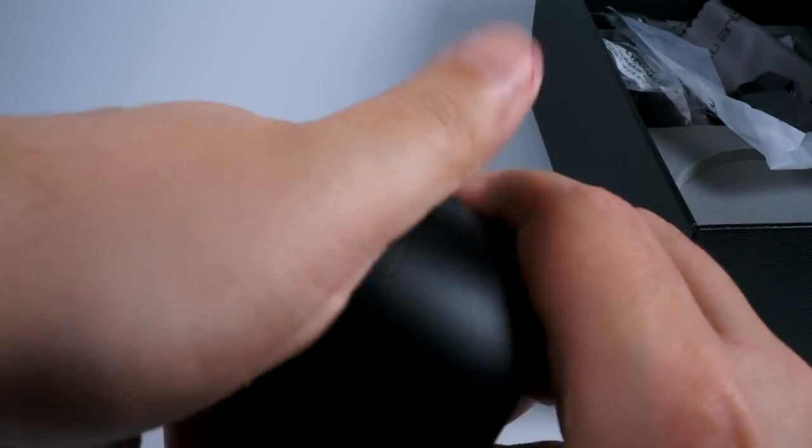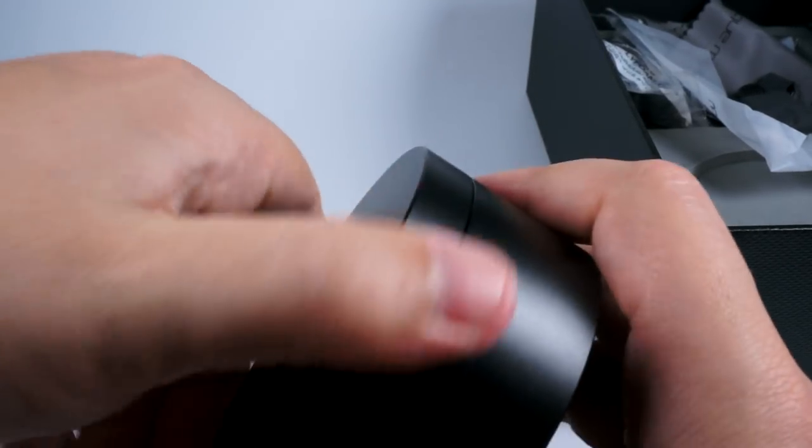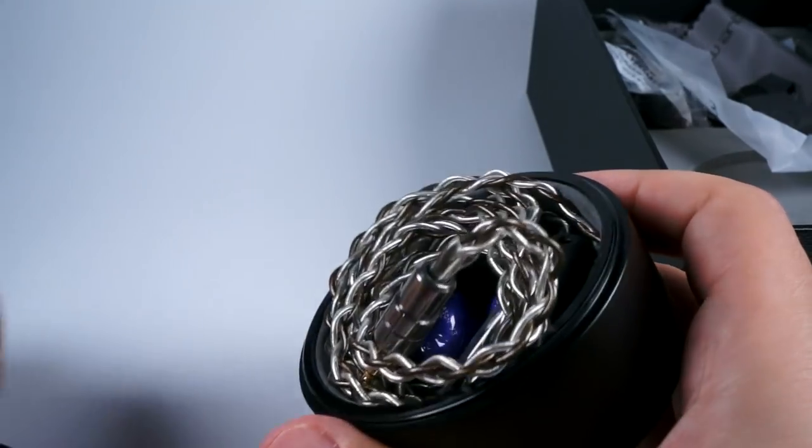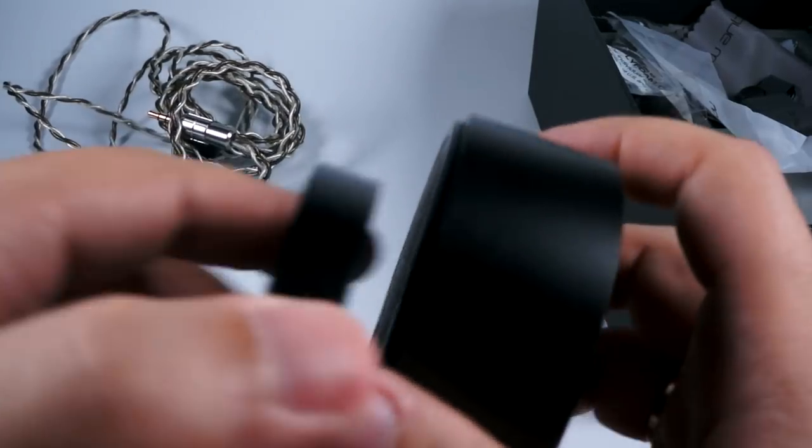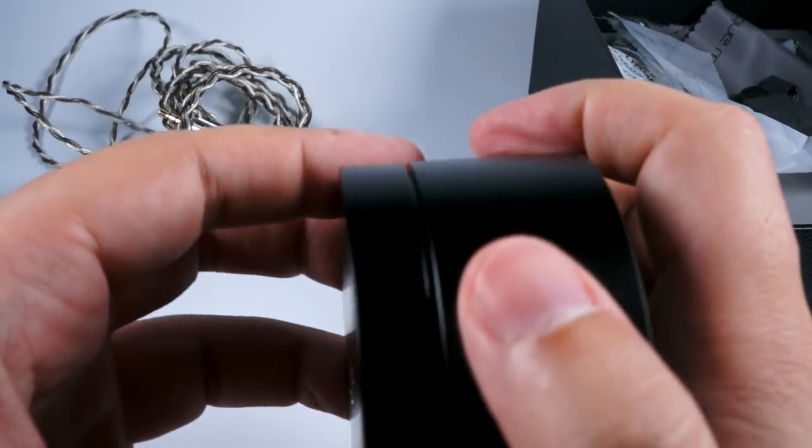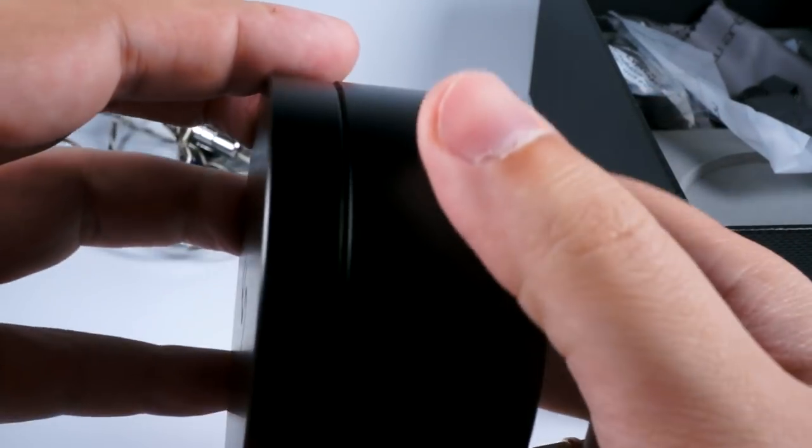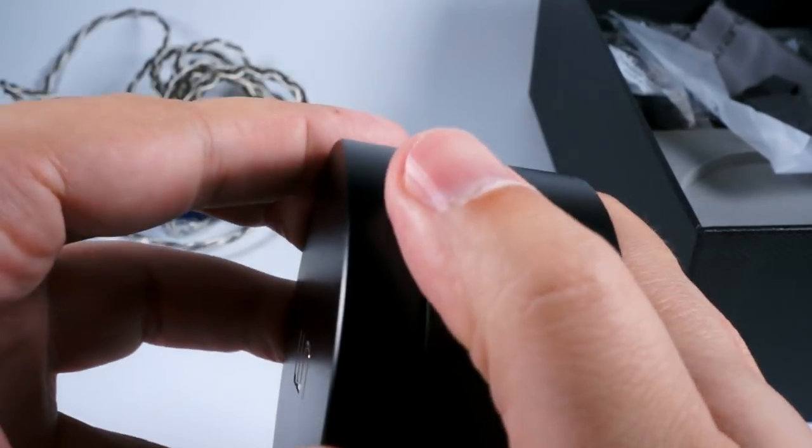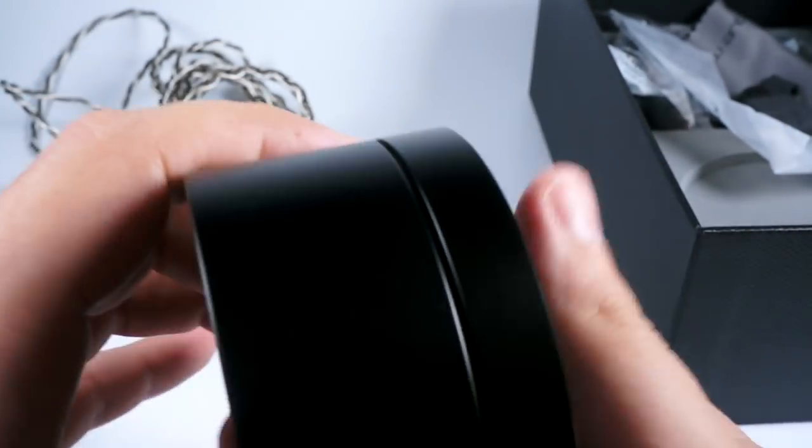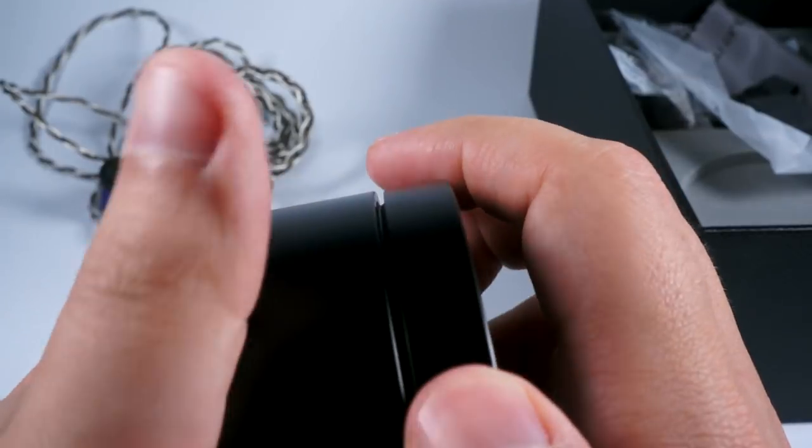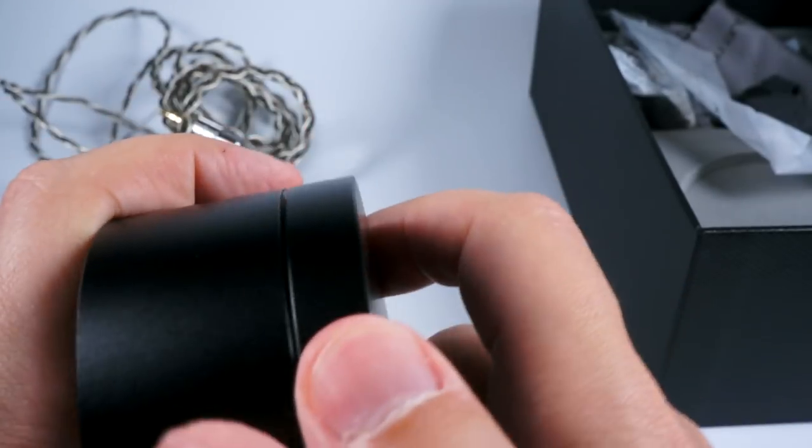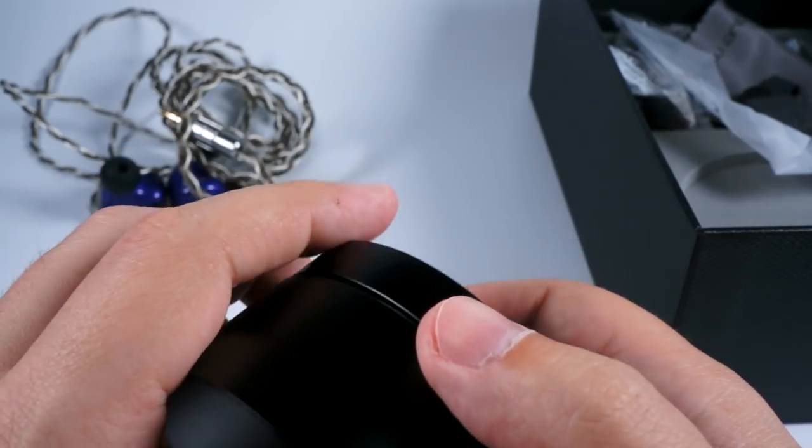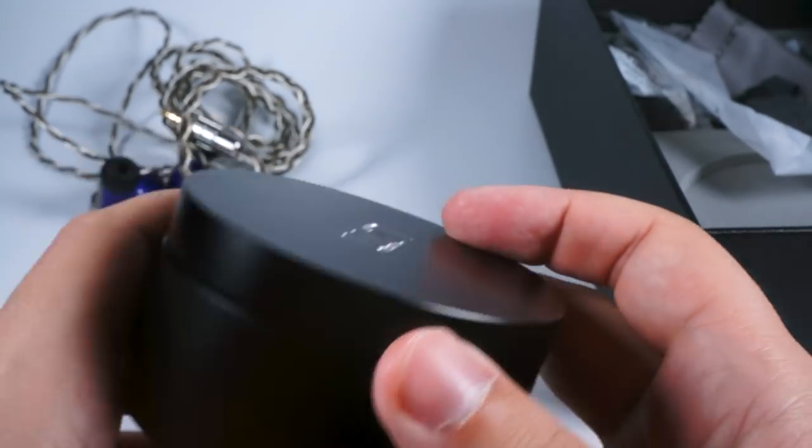And inside of this box you will have IEMs themselves. Here they are. So, accessory set is pretty good. You will have everything that you will need, almost everything. But of course a few packages of dehumidifier with silica gel could benefit in this accessory set. And also probably some cleaning tool would be nice too.